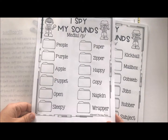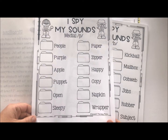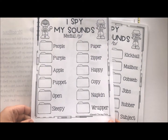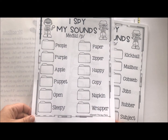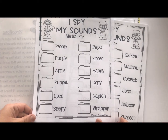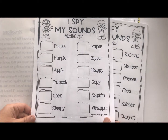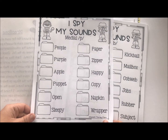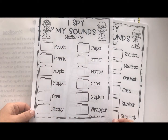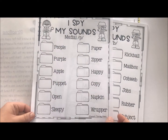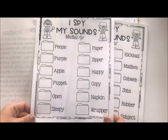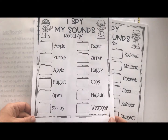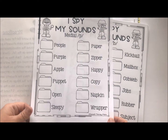And you go around the school and try to find these different items. Now, why it's good for sentences and conversational speech is they have to — you can have them ask people using their good sounds, like, 'Do you have anything that's purple?' And it's good for sentences. As we're walking through the hallways, we talk about the different items.